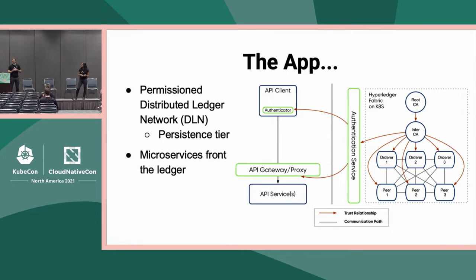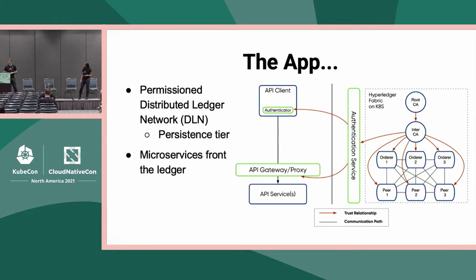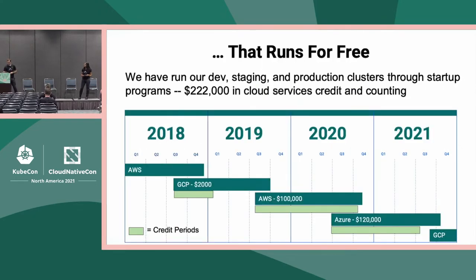Our distributed ledger is Hyperledger Fabric, developed by IBM. We've taken it to the edge: portions run in the cloud, portions run on customer systems. The orderers form a distributed system using Raft to elect leaders; the peers use gossip to establish their own distributed system, giving us a consensus mechanism. We've been able to run this near-free since 2018 by leveraging startup credit programs that all major cloud providers offer — they want to lure you from competitors with free credits to evaluate their systems.